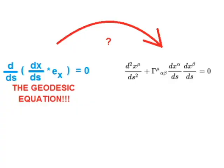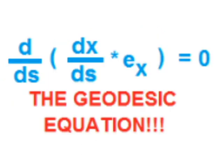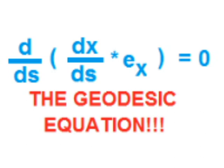Anyway, what's the deal with the geodesic equation we derived not looking like the geodesic equation we're familiar with? Well, we just need to do a little algebra. Here's where the product rule of differential calculus comes in. dx/ds times ex is a product. And we're taking the derivative of it in terms of s. You get this as your equation.